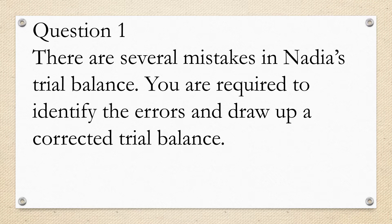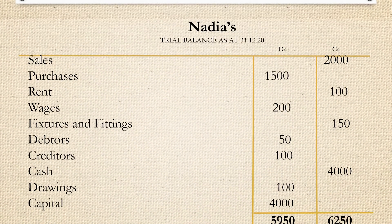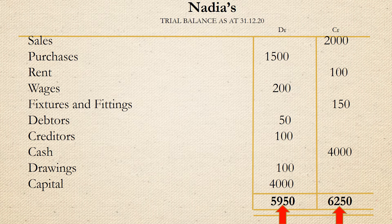Here is Nadia's trial balance. The first thing you need to do is identify the mistakes in this trial balance. The first mistake is that the balances are not equal. You need to remember that the credit and debit balances in a trial balance should always be equal. If you missed my tutorial on the trial balance, you can check out the video with the link in the description below. Now you need to go through each item listed to confirm if the balances have been placed in the correct columns.